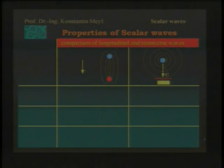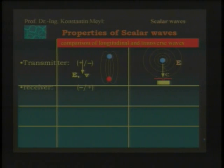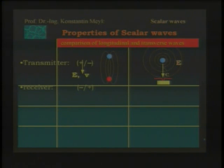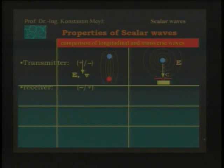Here you see the properties of scalar waves. If you have a transmitter and receiver with field lines in this way, these are longitudinal. That means they propagate from plus to minus, from minus to plus. In this direction, we have the electric field pointer, and in this direction we also have the speed of the wave.